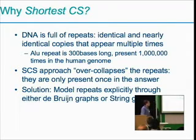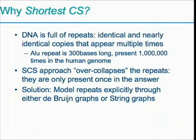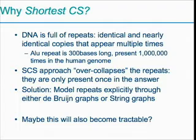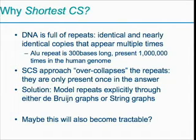There has been a lot of work over the past ten years or so on modeling repeats explicitly in the graph-theoretic framework. The two approaches I'll talk about are De Bruijn graphs — work by Pevzner and his group — and string graphs — work by Gene Myers. The hope of all these approaches has been that we can not only have a more accurate solution but also make it tractable, i.e., polynomial time.